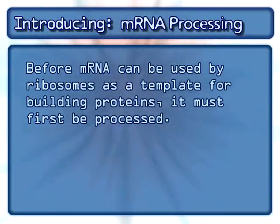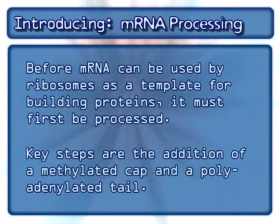Before mRNA can be used by ribosomes as a template for building proteins, it must first be processed. Key steps are the addition of a methylated cap and a polyadenylated tail.